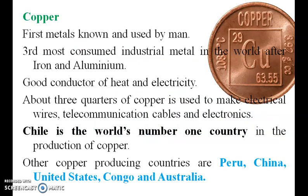Copper is the first metal known and used by man, and is the third most consumed industrial metal in the world after iron and aluminium. It is a good conductor of heat and electricity. Chile is the world's number one country in producing copper. Other producing countries are Peru, China, United States, Congo and Australia.